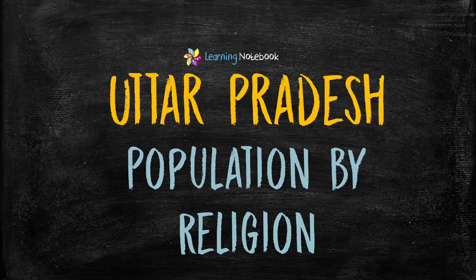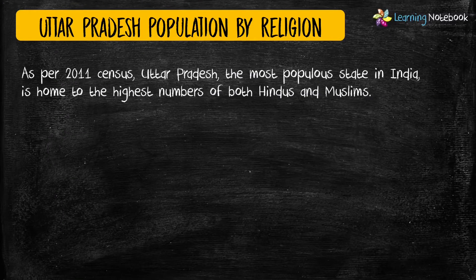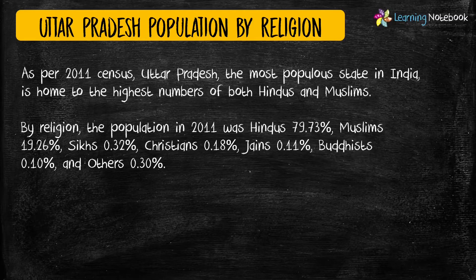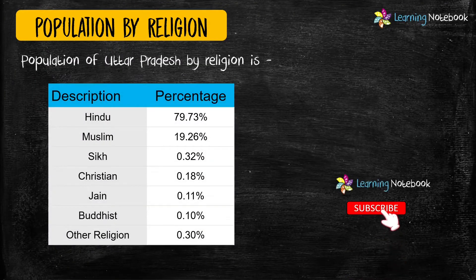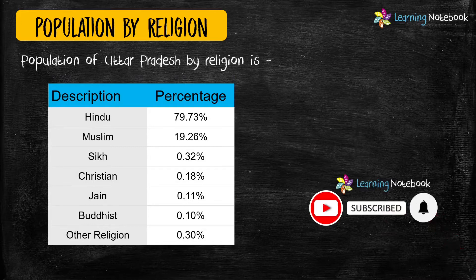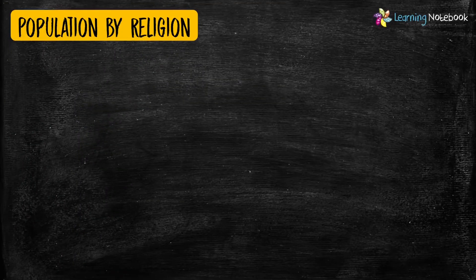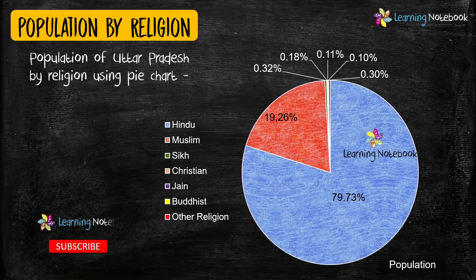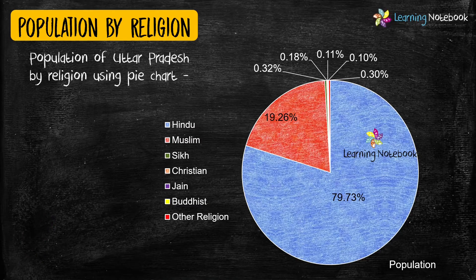The next idea for your Maths Art Integrated Project is population of Uttar Pradesh by religion. A pie chart is another beautiful way to represent the given data, so you may use a pie chart to show the population of Uttar Pradesh by religion.